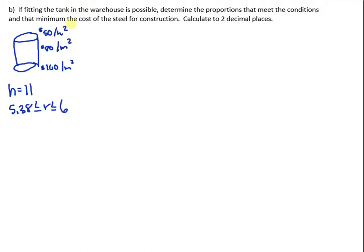Part B asks us if fitting the tank in the warehouse is possible, to determine the proportions that can meet the conditions and the minimum cost of steel. So of course you want to minimize your costs for construction. So let's take a look at surface area. The cost of the top is going to be $50 times what's the area of the top? Well we just have pi r squared, which is just a circle.